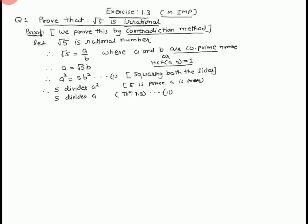5 is prime and 5 divides a. Therefore, a equals 5a₁, where a₁ is an integer. Again squaring both sides, a² equals 5 square, a₁ square.